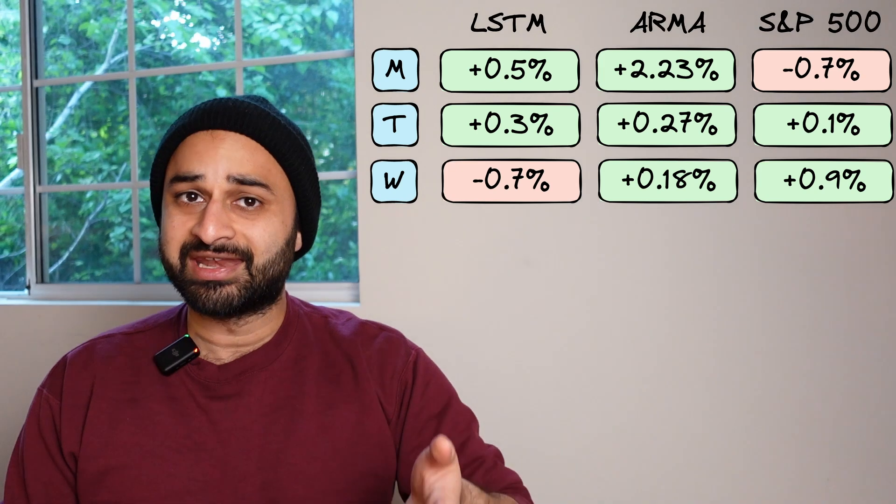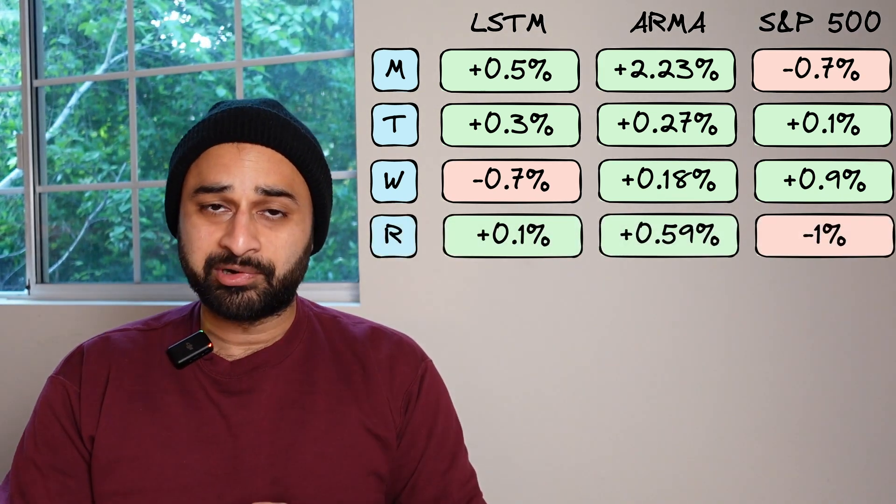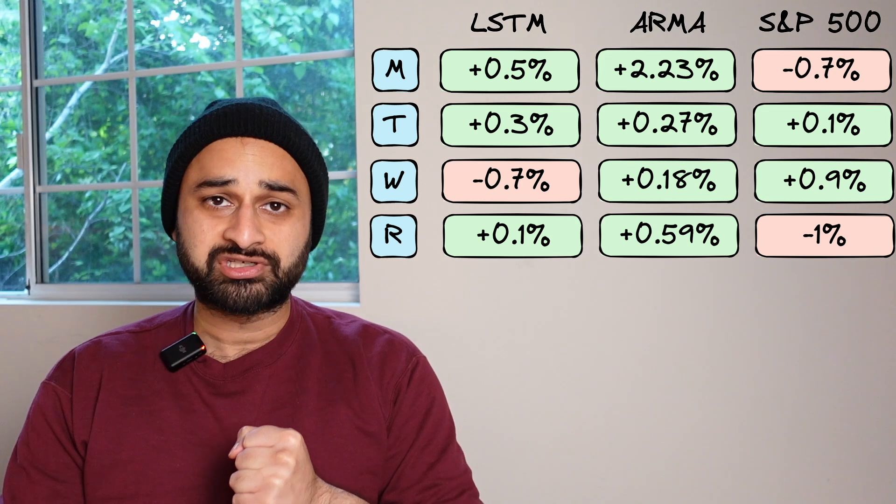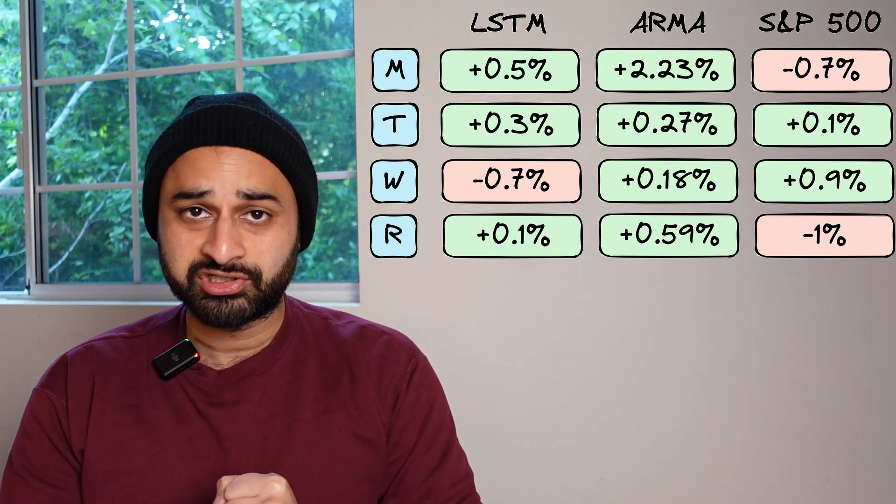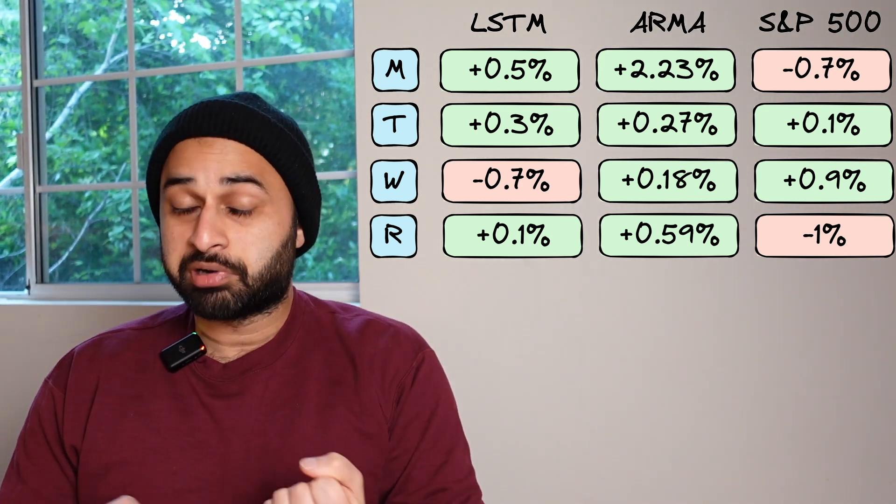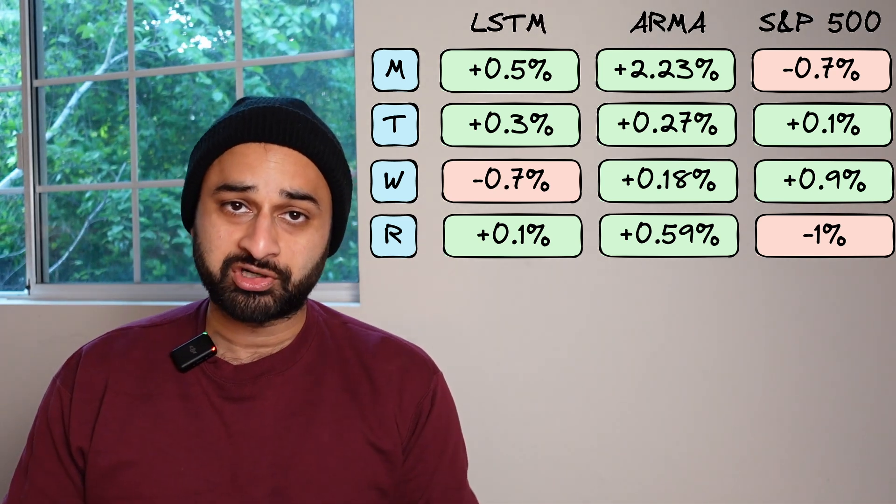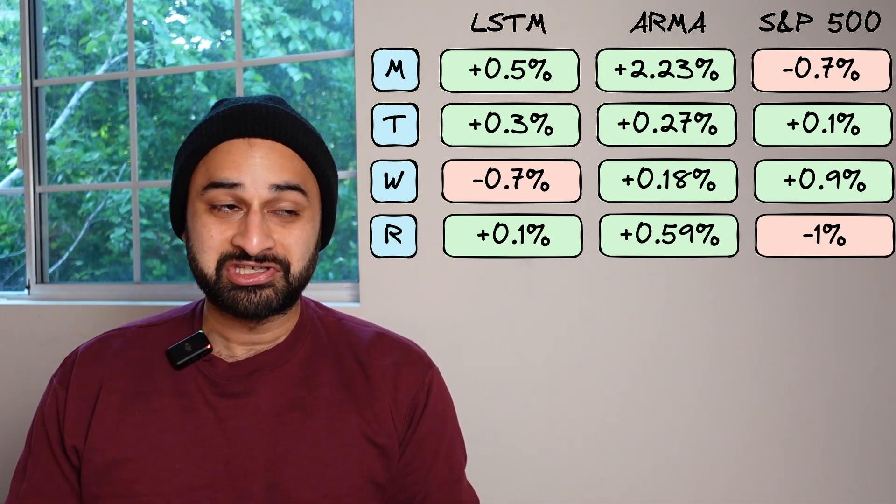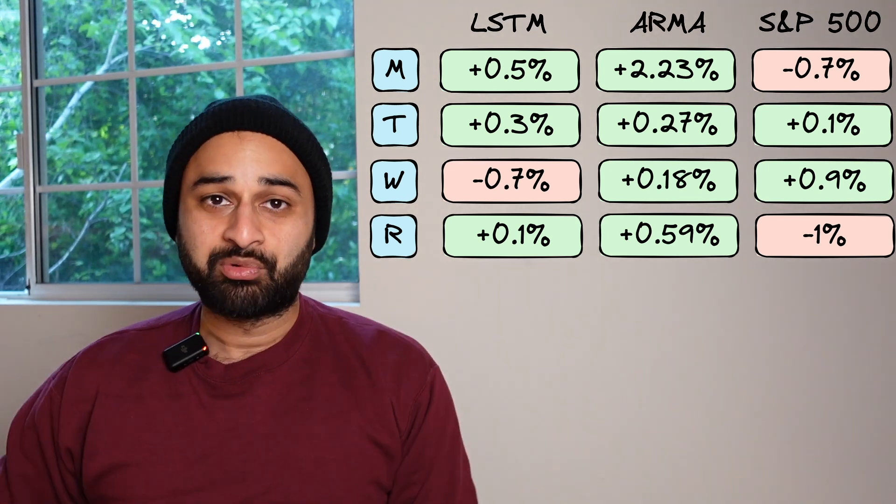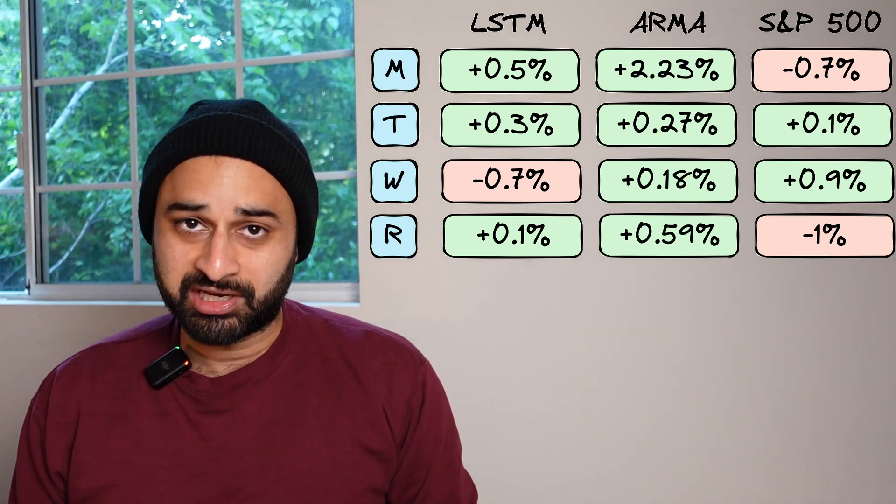Going into Thursday, we see that ARMA dominance again. The ARMA model gives you almost a 0.6% return on Thursday, with the LSTM model being positive but just a modest 0.1%. But the great news is they both demolished the market again. The market would have given us negative 1% today if we had bought and sold it.